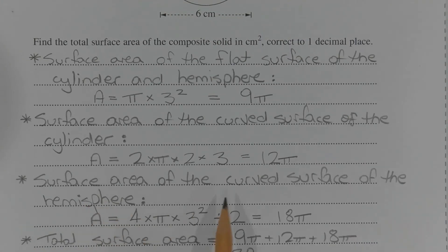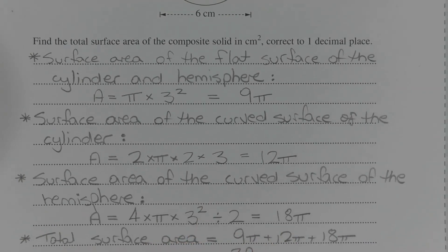Next, work out the surface area of the curved surface of the hemisphere. Using the formula for the surface area of a sphere and then halving it, we have area equals 4 times π times 3 squared divided by 2, which equals 18π.